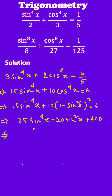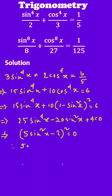You can write it as (5 sin²x − 2)² = 0. Therefore 5 sin²x = 2, so sin²x = 2/5.